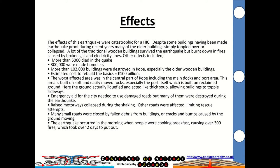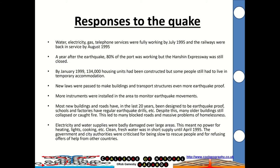The worst affected area was the central part of Kobe, including the main docks and the port. Emergency aid needed for the city was really difficult to get through because the roads were damaged and covered in rubble. Raised motorways collapsed during the shaking, and the earthquake occurred in the morning when people were cooking breakfast, causing over 300 fires, which took two days to put out.